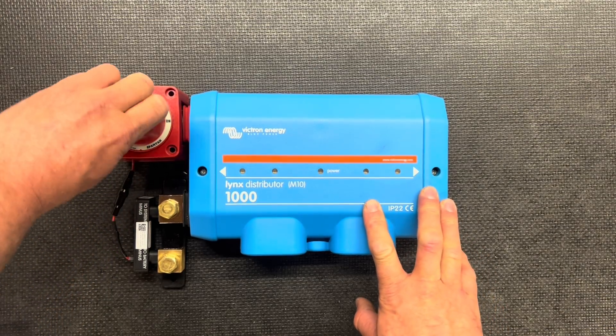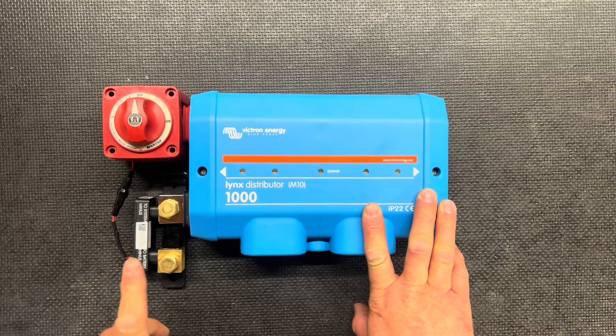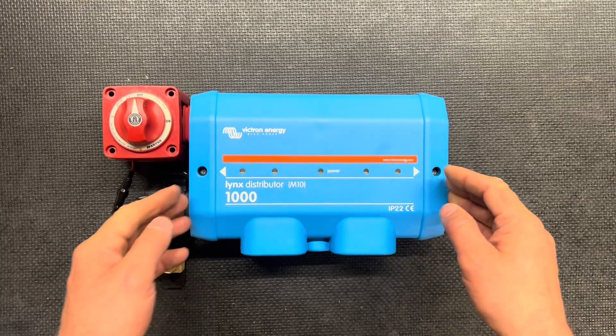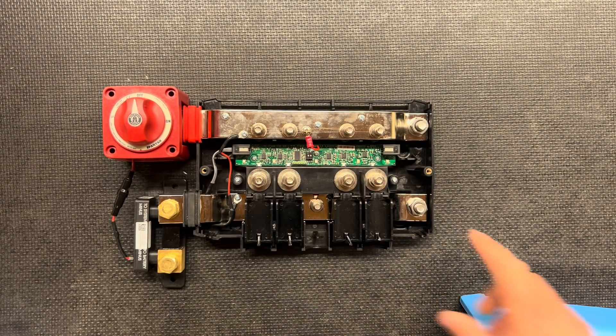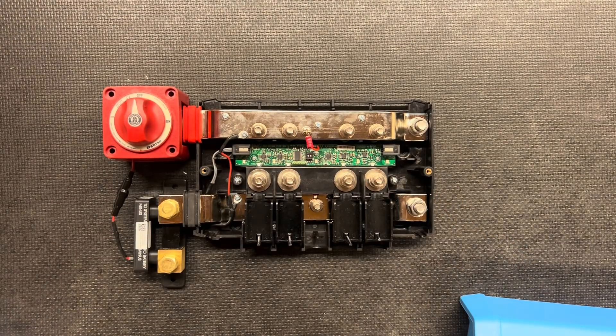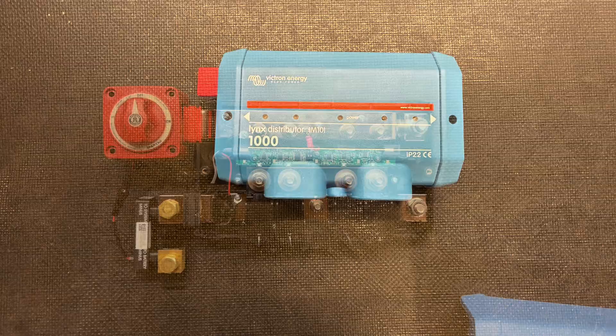Here we have the on off switch, this is basically going to connect and disconnect the battery from the system. We have the shunt, this is going to measure current going to and from the battery. And here's the lynx distributor, this is going to house four fuses as well as have four indicator lights to show you whether or not the fuses are blown without having to open it up and test the fuses individually.